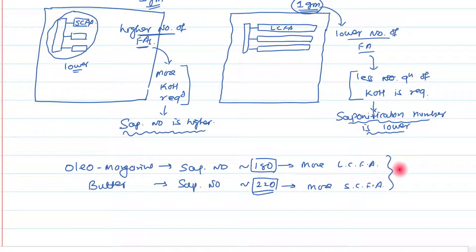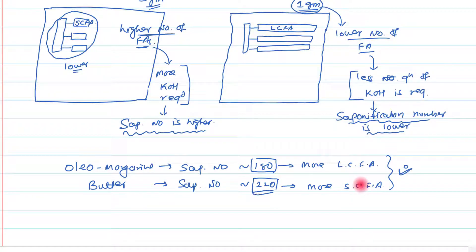This information we can get from the saponification number. So this was all about the saponification number. In the next video, I will discuss the acid number. If you have any query or confusion, please write it down in the comment section below. Please like, share, and subscribe to my channel. Thank you.